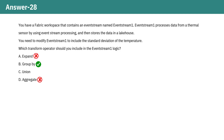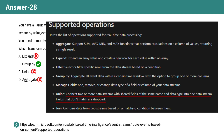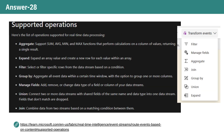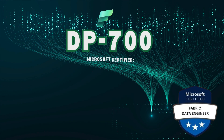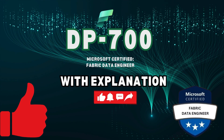Union is also incorrect as it is used to connect two or more data streams with shared fields of the same name and data type into one data stream. Fields that don't match are dropped. I encourage you to check out the documentation and keep these operators in mind as they'll be helpful in future questions. See you with another question.